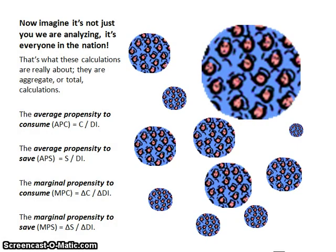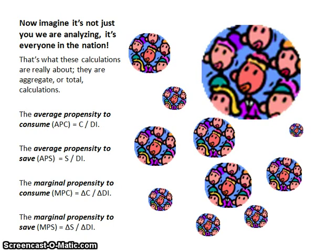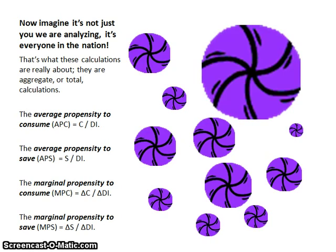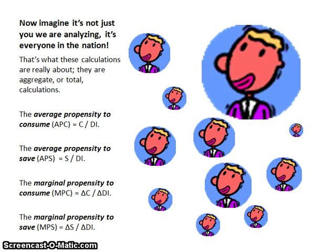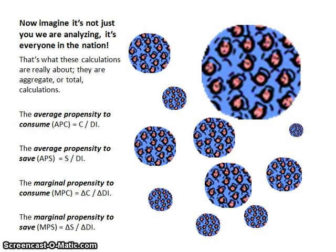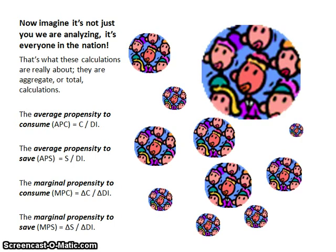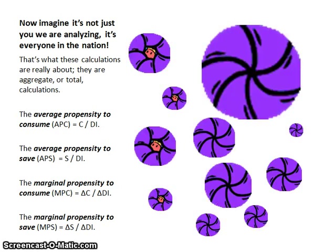Now let's imagine that we're not just analyzing you, but every single person in the nation — these are aggregate calculations involving an entire nation. To get APC, we take national consumption divided by national disposable income. For APS, we take national savings divided by national disposable income. For MPC, we take the change in consumption divided by the change in disposable income. For MPS, we take the change in savings divided by the change in disposable income. These are formulas you do need to commit to memory, but they're pretty easy to remember.